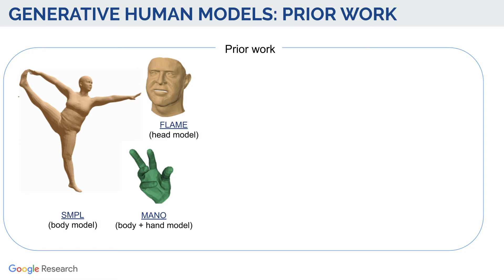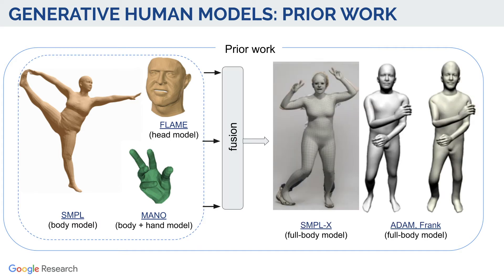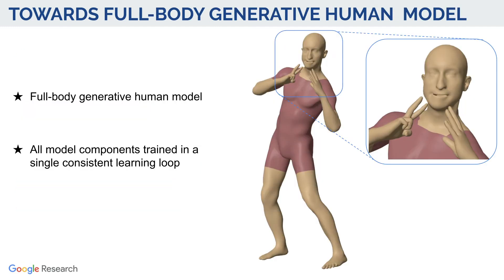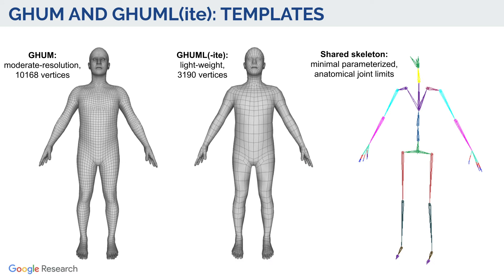There has been prior work on modeling 3D-specific body parts like faces and hands, whereas recent full-body models such as ADAM or SMPL-X are constructed by connecting these learned components into a joint parameterization. Differently from previous work, our generative human models are built for the full body from the onset, and we train all our model components in a single consistent learning loop, leveraging the structure in all data simultaneously.